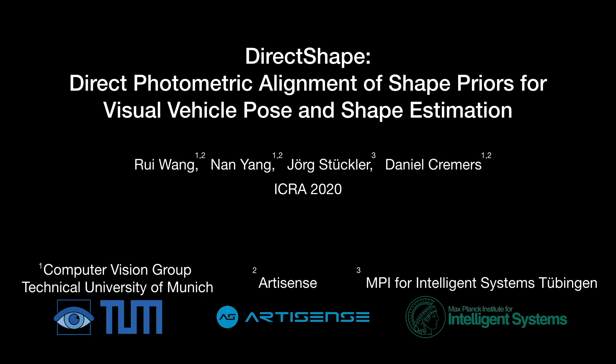Hello everyone, my name is Rui Wang, and I'm a PhD student of the computer vision group of TUM. Today I'm glad to present our work, Direct Photometric Alignment of Shape Priors for Visual Vehicle Pose and Shape Estimation, done together with Nan Yang, Jörg Stückler, and Daniel Cremers.